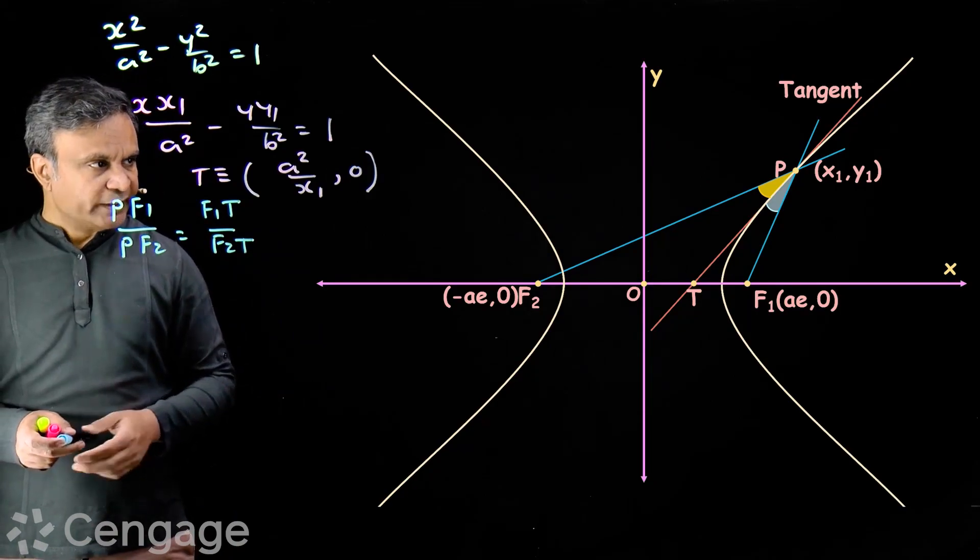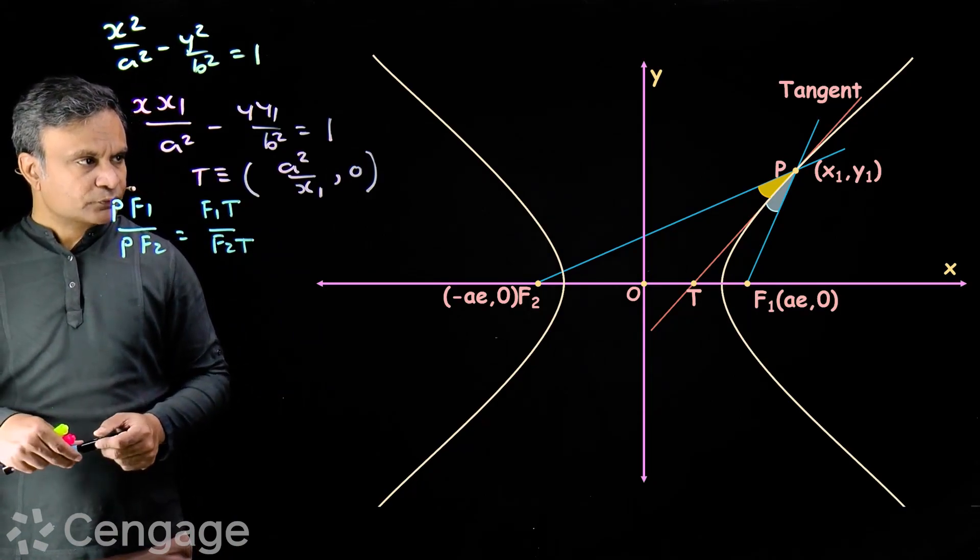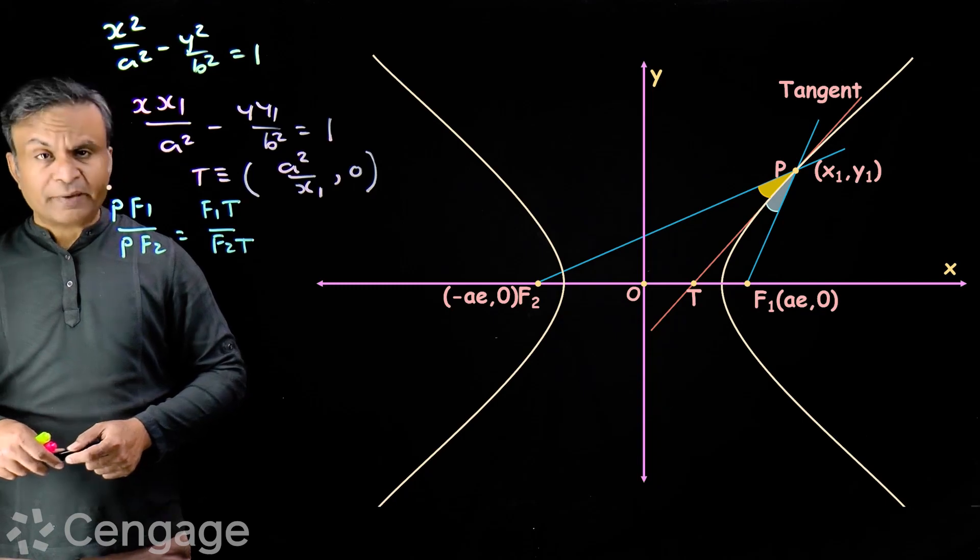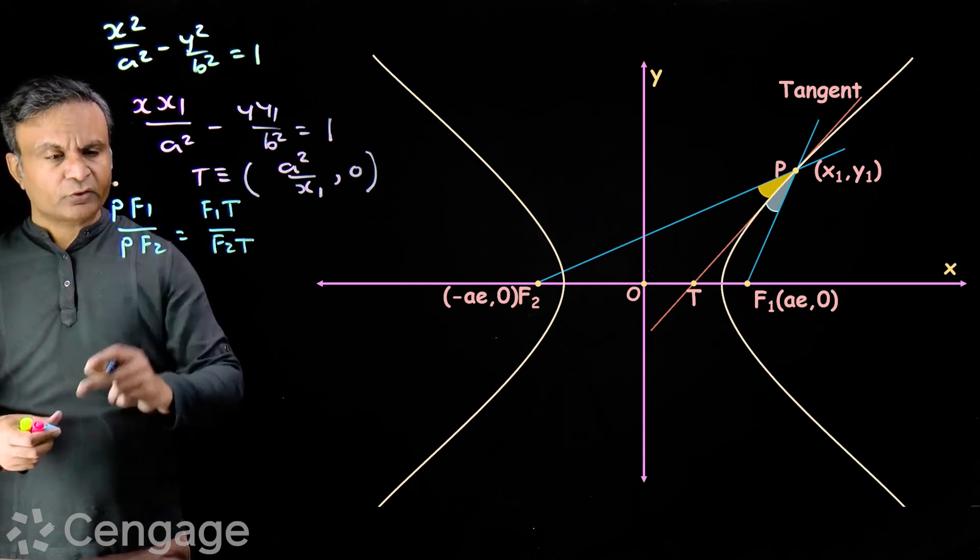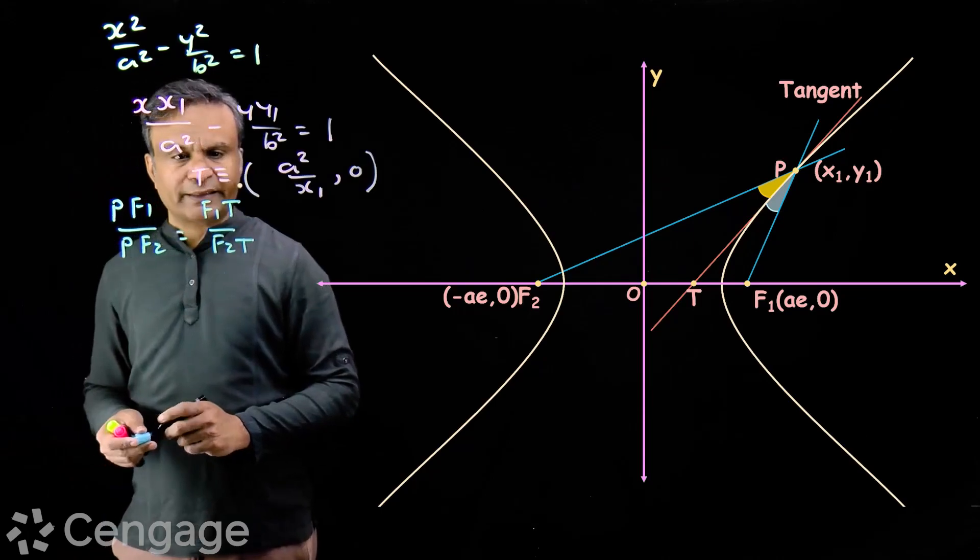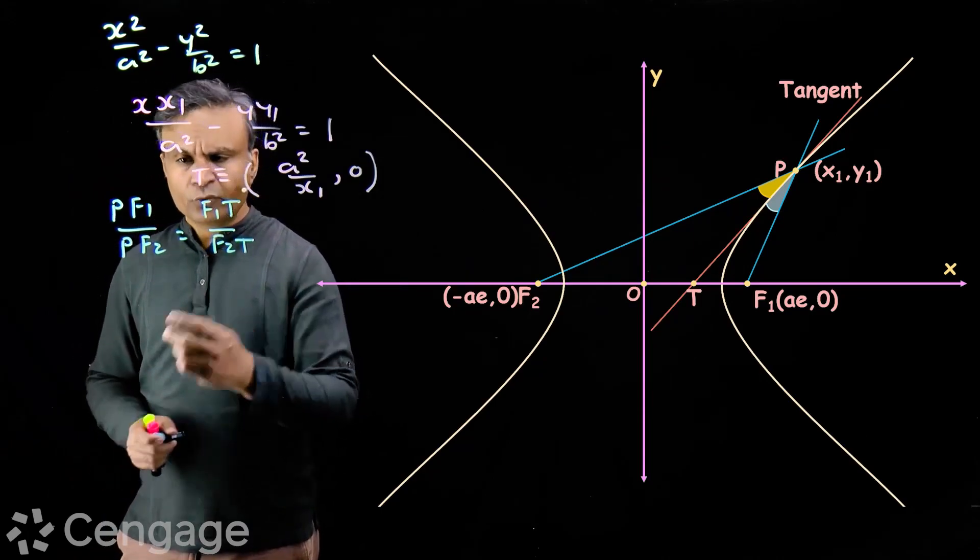In triangle PF1F2, if PT is angle bisector then we must have PF1 over PF2 is equal to F1T over F2T. Let's prove it.